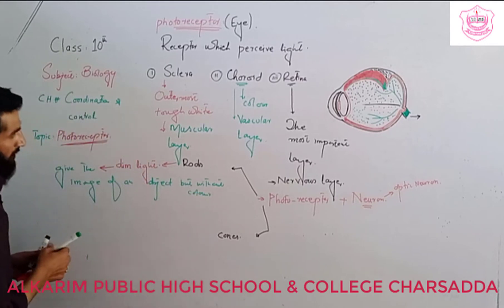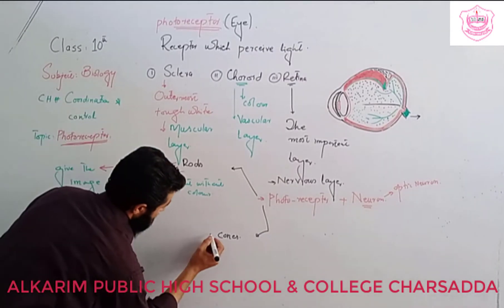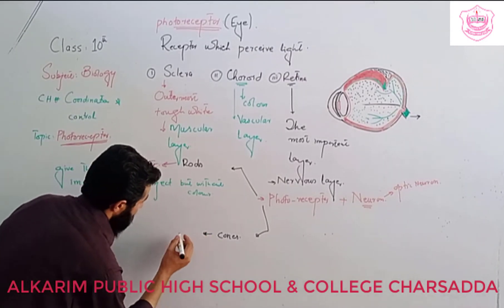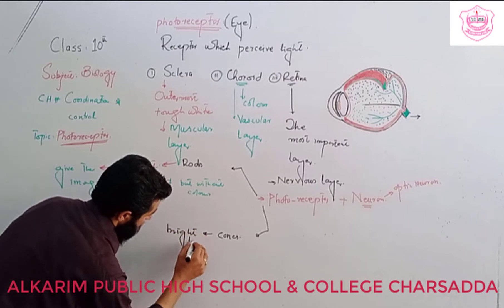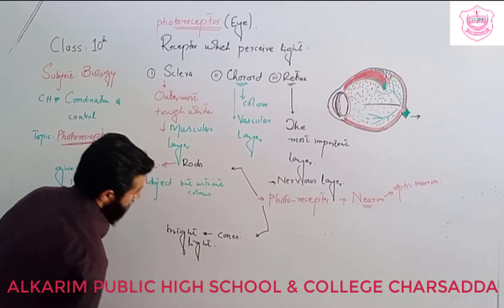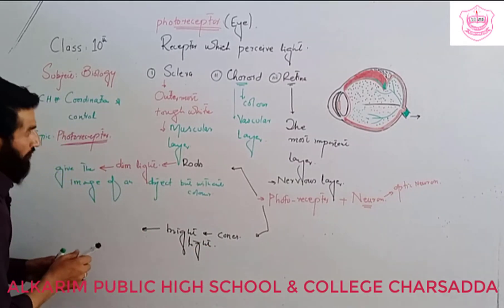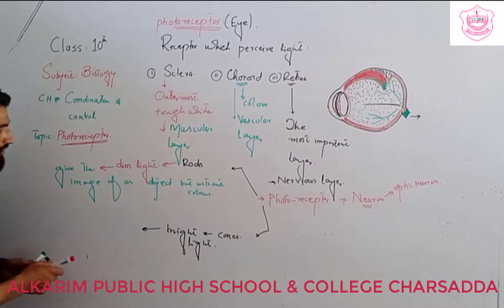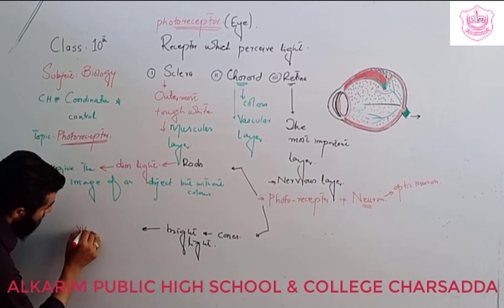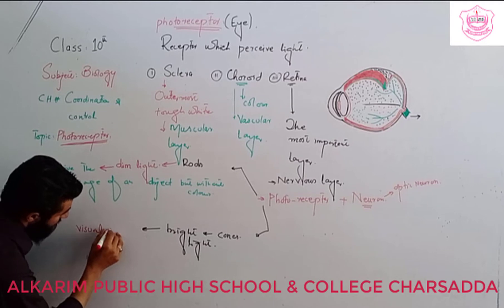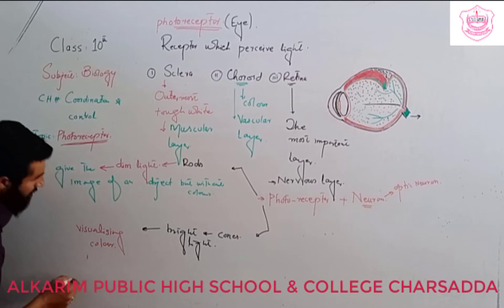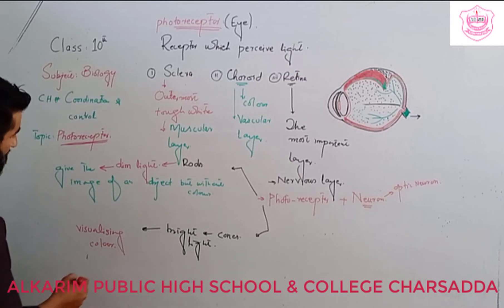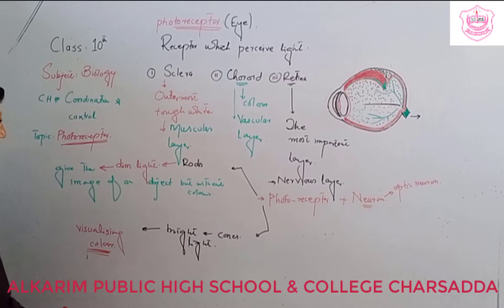Cones pursue intense light — simply, bright light. Cones are responsible for visualizing color, meaning they are responsible for producing the image of an object with colors.